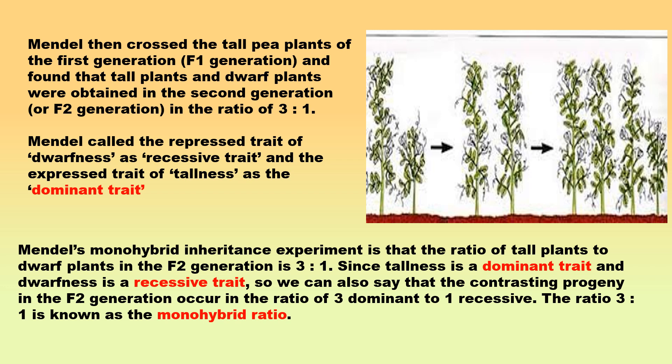In this way, Mendel's experiment showed that the traits like tallness and dwarfness are inherited independently. This is because if the traits of tallness or dwarfness had blended or mixed up, then medium-sized pea plants would have been produced. The ratio of tall plants to dwarf plants in the F2 generation is 3:1. Since tallness is a dominant trait and dwarfness is a recessive trait, the contrasting progeny in the F2 generation occur in the ratio of 3 dominant to 1 recessive. The ratio 3:1 is known as the monohybrid ratio.